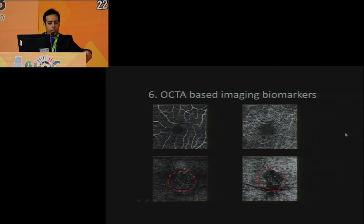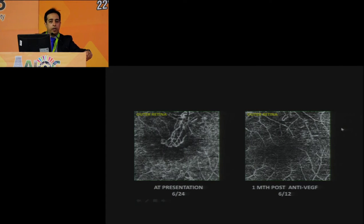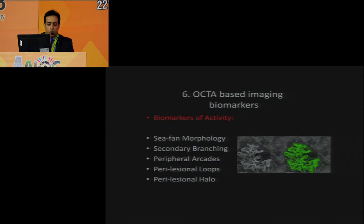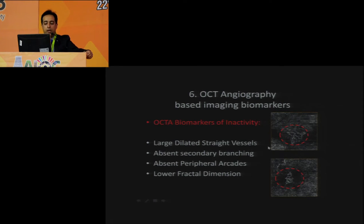OCT angiography (OCTA) has emerged in recent years, showing vasculature at different planes from superficial to deep levels, giving new understanding of AMD. OCTA-based imaging biomarkers for activity include CFAN morphology, secondary branching, peripheral arcades, and perilesional loops. Inactivity markers include large dilated straight vessels, absence of secondary branching, and lower peripheral arcades.